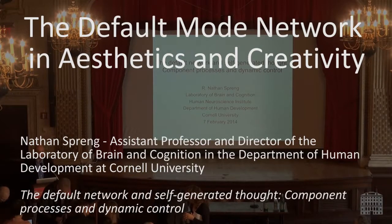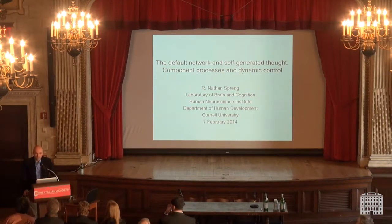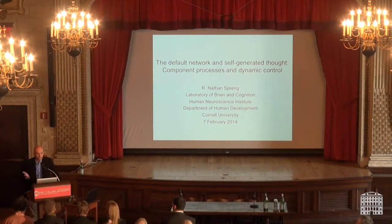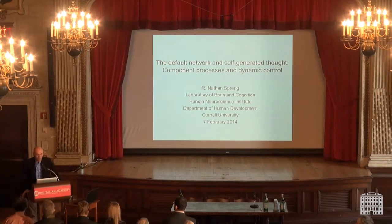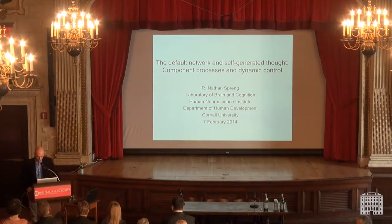Welcome back. Our next speaker is Nathan Spreng, who is an assistant professor at Cornell University, and he holds the title of the Rebecca Q and James C. Morgan Sesquicentennial Faculty Fellow. Sesquicentennial means 150 years, and Cornell is going to be celebrating its 150th anniversary of its founding very soon. Nathan is one of a relatively younger guard of scientists who have taken research on the default network to very interesting and important new places. He was recently identified by the Association for Psychological Science as a rising star for his research on autobiographical memory, imagination, future-oriented thought, and functional connectivity among the elements of the default network. He's also interested in understanding how the default network and its functional roles change across the lifespan. Let's welcome Nathan Spreng.